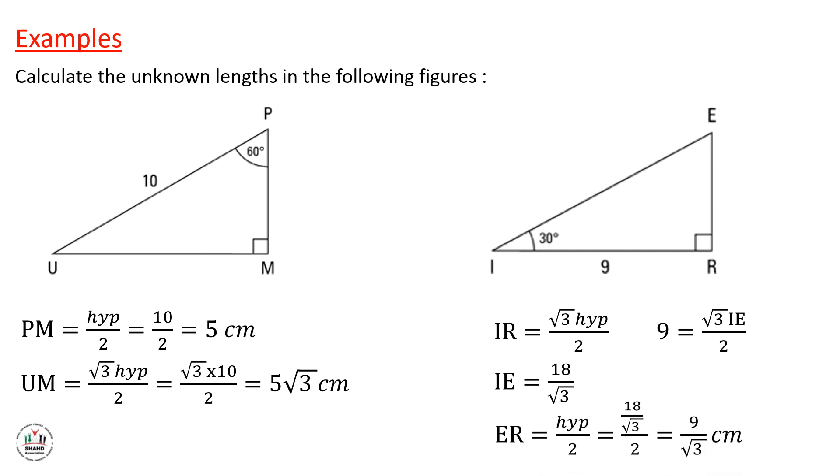And now we can calculate ER, which is equal to hypotenuse over 2, 18 over radical 3 over 2. The answer will be 9 over radical 3 centimeters.